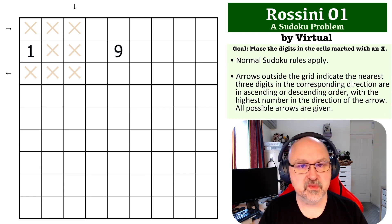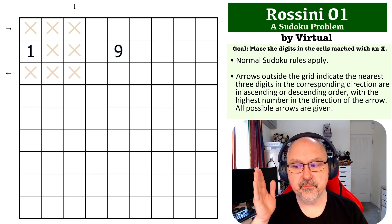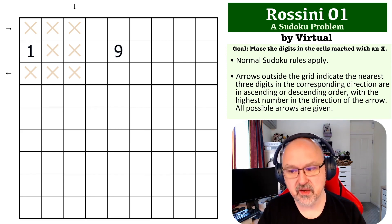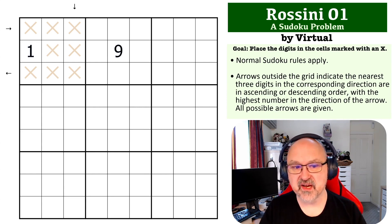So the goal with this one is to place the digits in all the cells marked with Xs, and the way it works is digits which are pointed to by arrows, or the nearest three digits that are pointed to by arrows, must be in ascending order. Now it says all possible arrows are given.